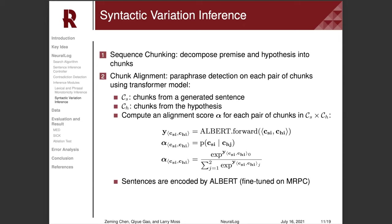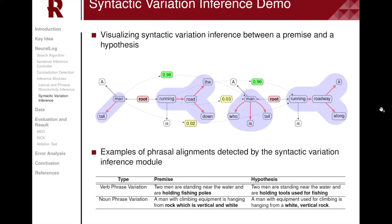First, sequence chunking is conducted to break sentences down into smaller chunks. Then, we align chunks between two sentences by doing paraphrase detection on each pair of chunks using a transformer model. We use the ALBERT model to encode each chunk and the softmax function to calculate alignment likelihood. Here is a visualization of the syntactic variation inference. The blue areas are chunks extracted from the sentences. The numbers are alignment likelihood, where aligned chunks will have a higher likelihood. We also show some examples of phrasal alignments detected by our method.